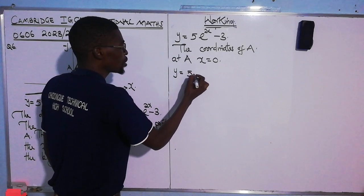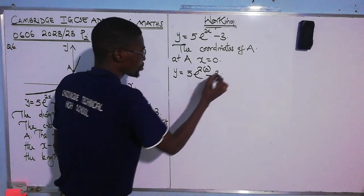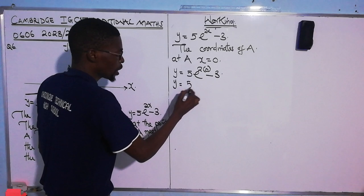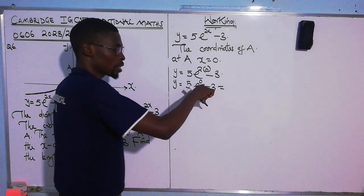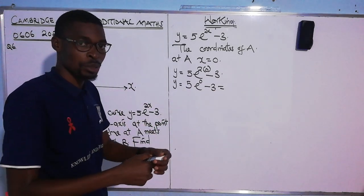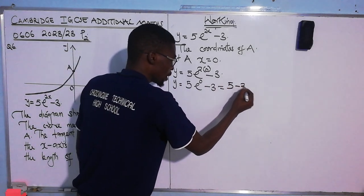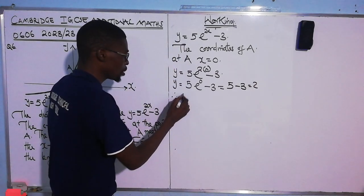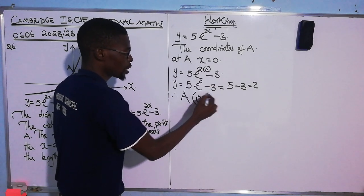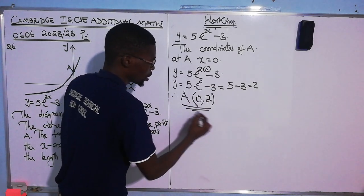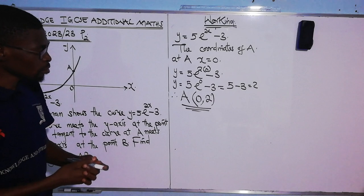Substituting x = 0: y = 5e^(2×0) − 3 = 5e^0 − 3. Any value raised to the power of 0 gives 1, so we have 5 × 1 = 5, then 5 − 3 = 2. Therefore A has coordinates (0, 2).